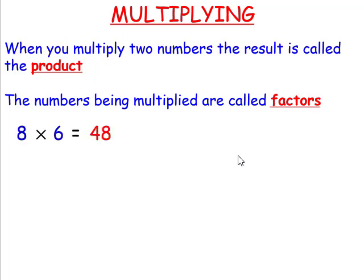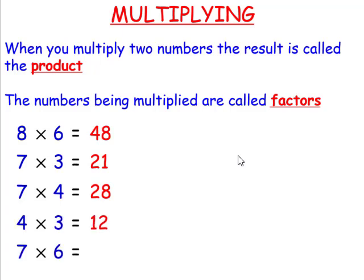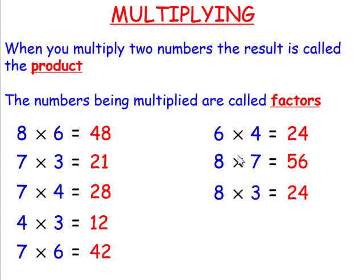8 times 6, which is 48. 7 times 3, which is 21. 7 times 4, which is 28. 4 times 3, which is 12. 7 times 6, which is 42. 6 times 4, which is 24. 8 times 7, which is 56. 8 times 3, which is 24. 6 times 3, which is 18. And 8 times 4, which is 32.